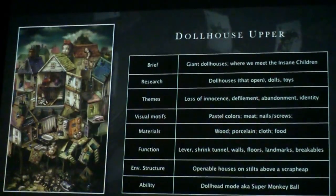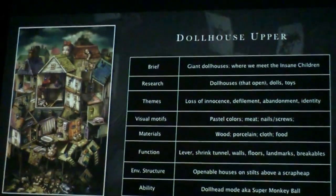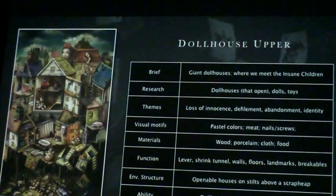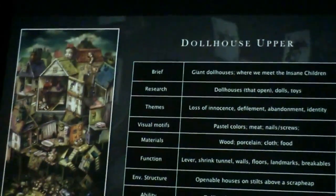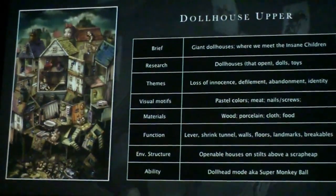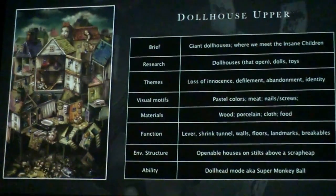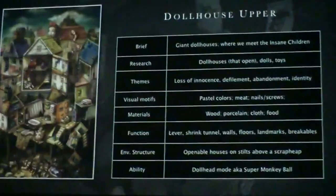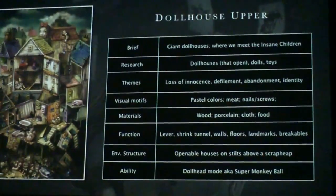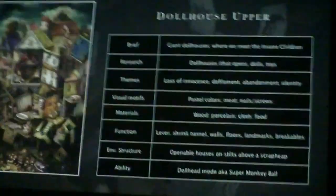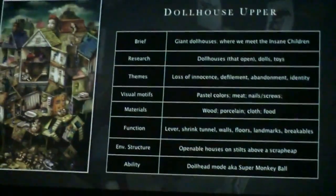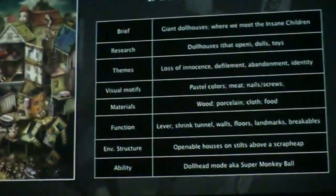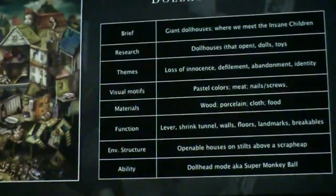From all of this, I can establish this part of the schema. The brief for this section: it's going to be giant dollhouses, and this is where we meet the characters of the insane children. We do our research, we find themes from the source material — all these questions that we can fill in. And I give this information to the artists to keep them all working together in the same direction.